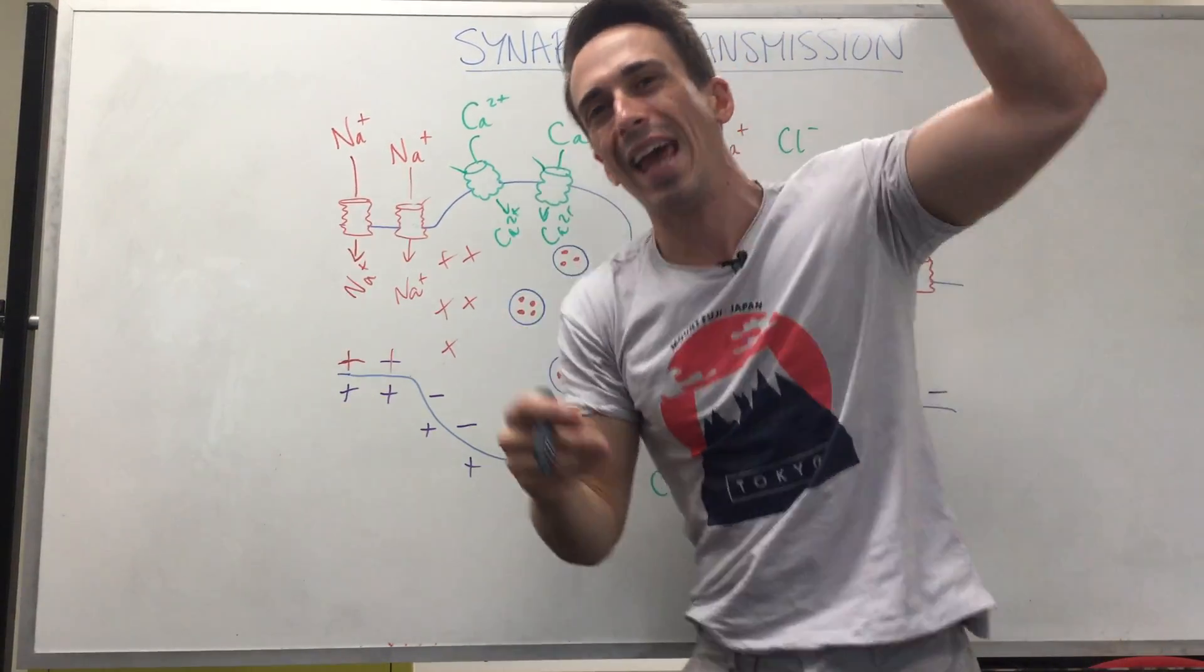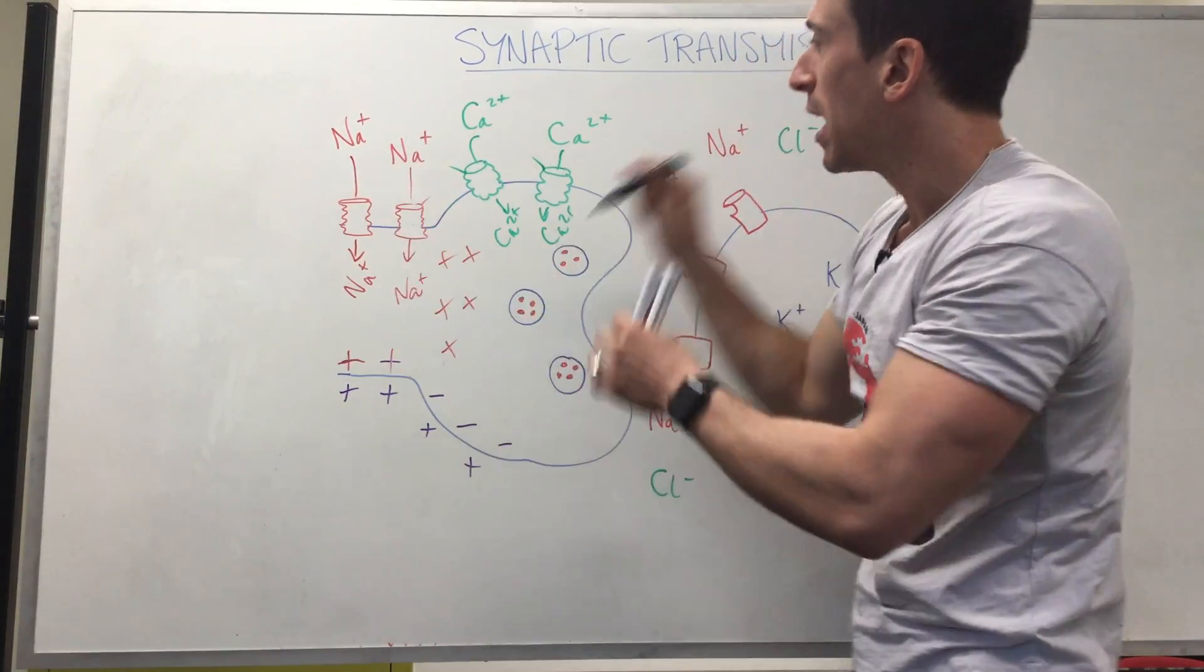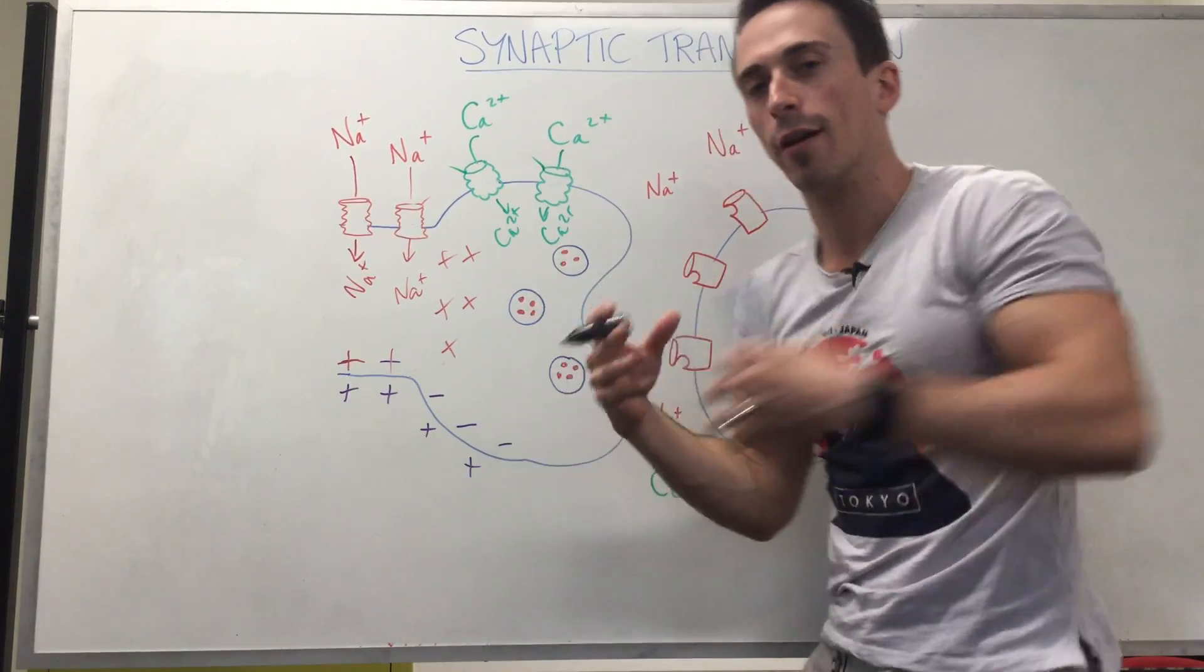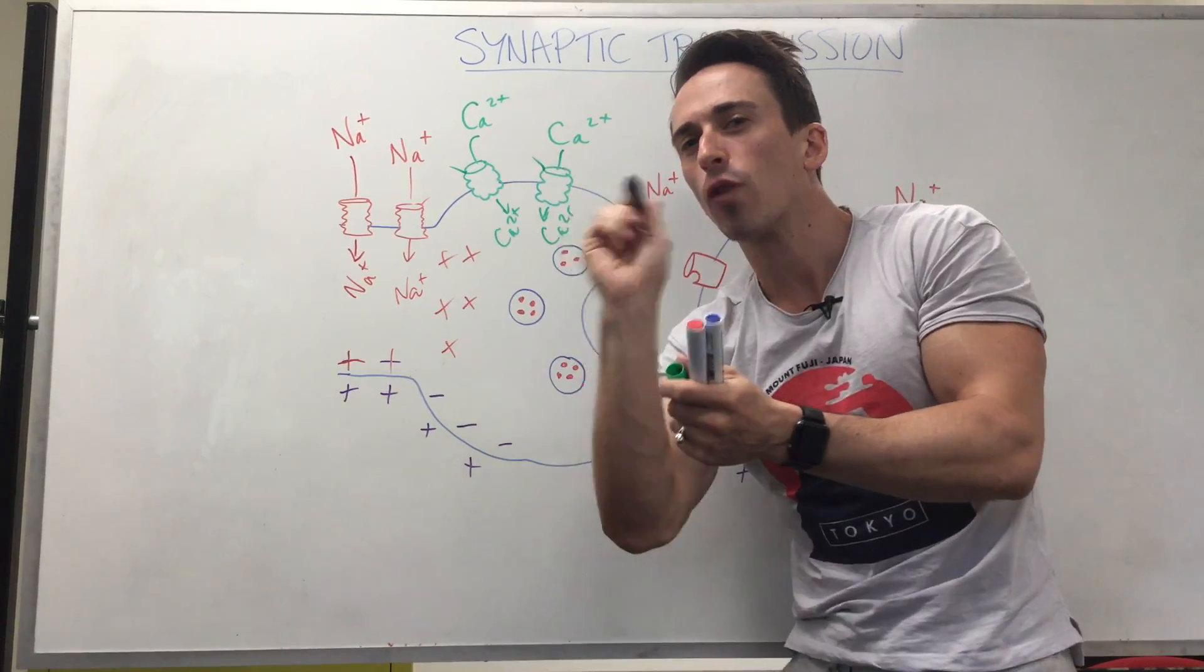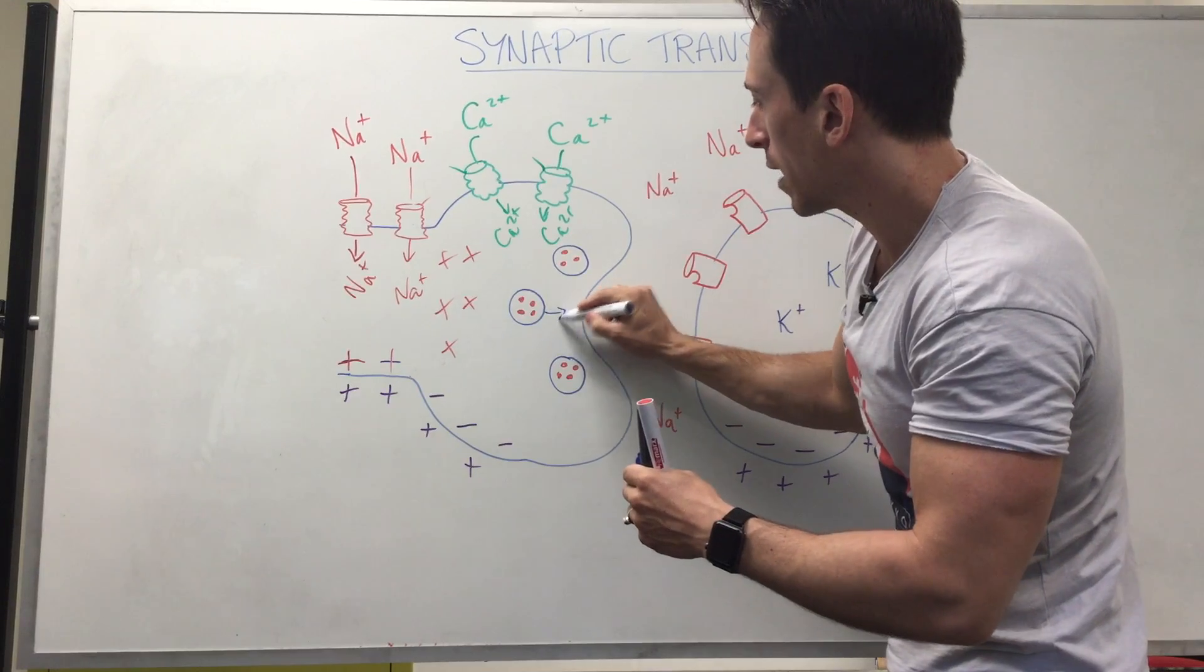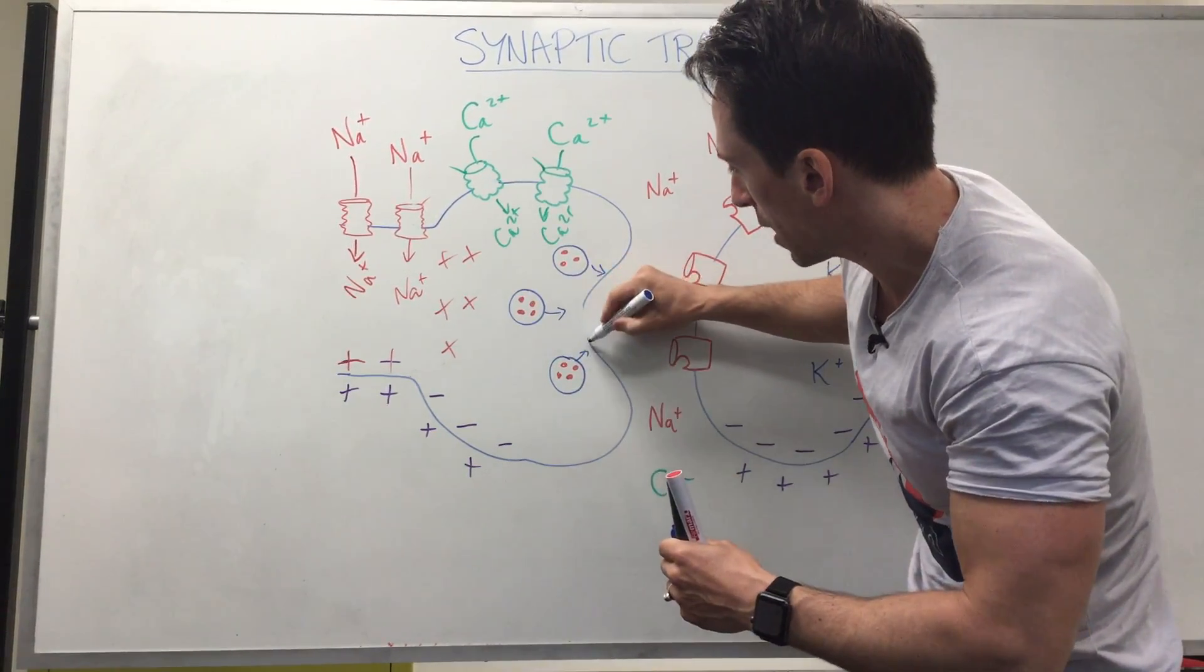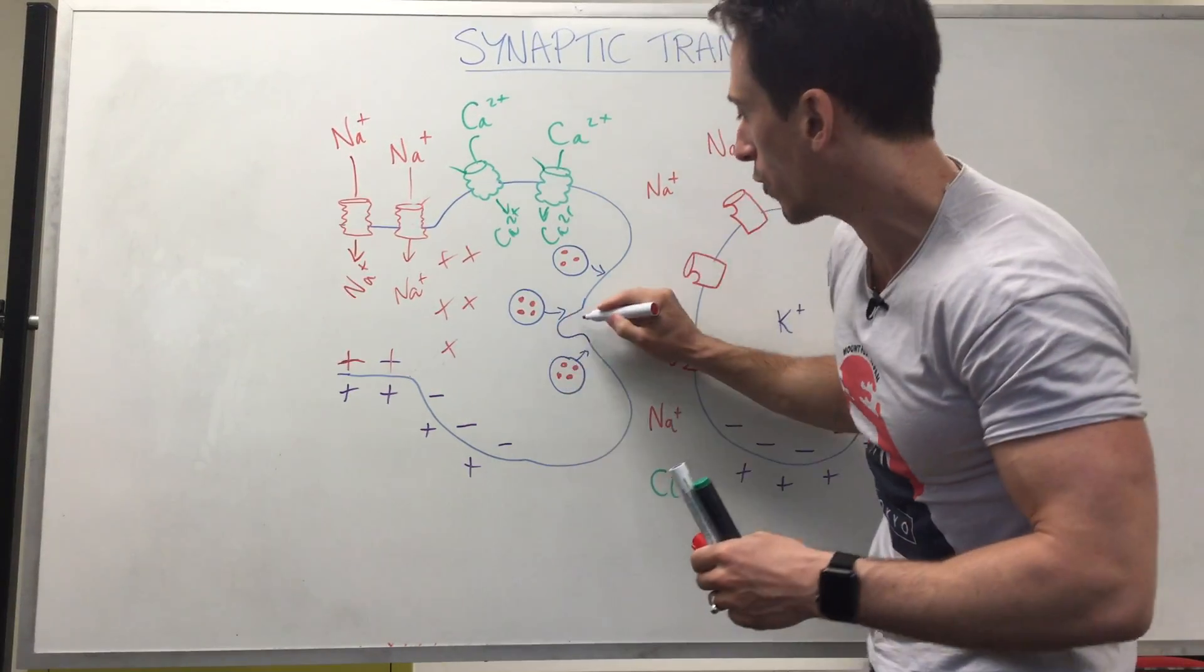And what calcium does when it enters the synaptic terminals, the very ends of neurons, it stimulates these little things here, which are called vesicles. So they're plasma membranes with neurotransmitters inside. And it stimulates them to start moving their way towards the plasma membrane. They will fuse with the plasma membrane and release their contents, which will be neurotransmitters.